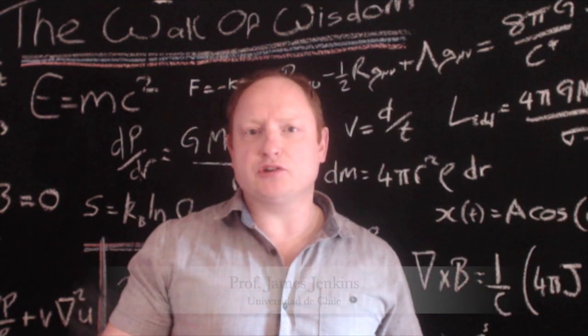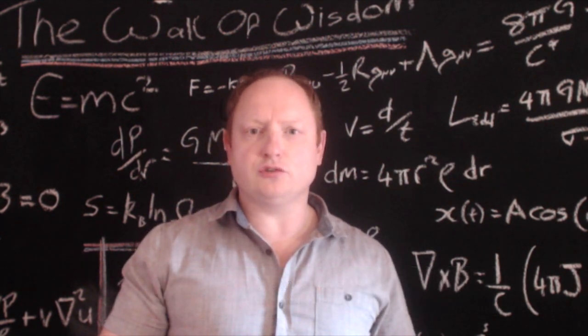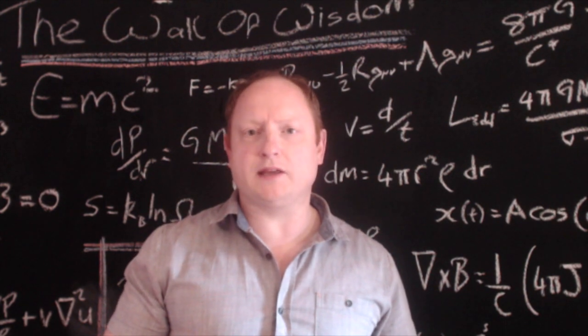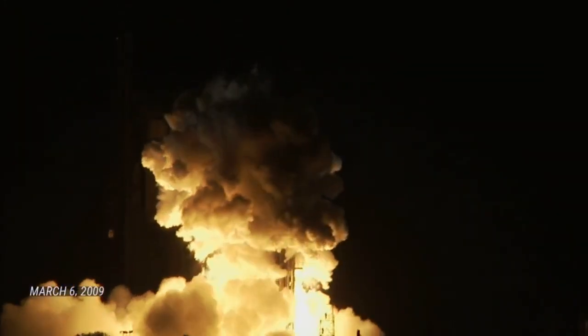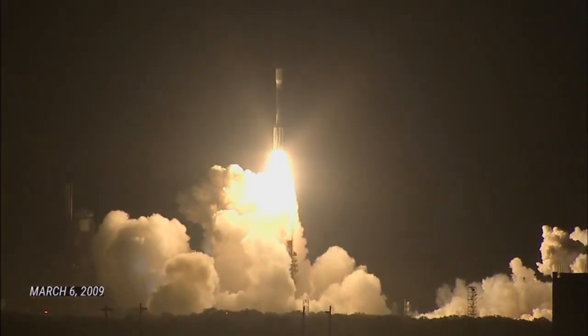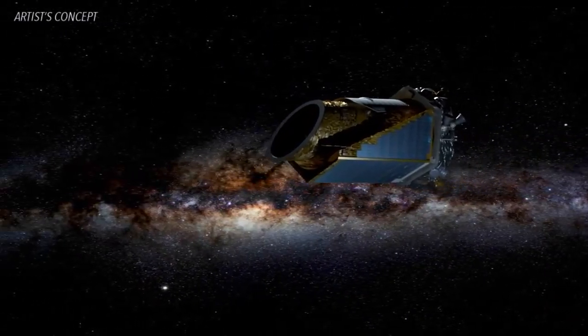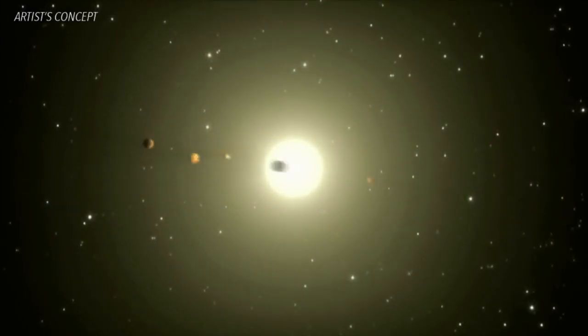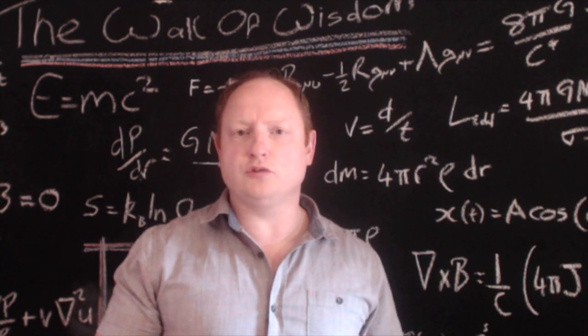Since the end of the Kepler space mission in 2018, we quickly learned that extrasolar planetary systems were far more different than what we expected. The Kepler mission flew for nine years, launching in 2009, and for the first four years it observed the same around 150,000 stars in a fixed region of the northern hemispheric sky.